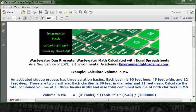There are two clarifiers. Each clarifier is 36 feet in diameter and 11 feet deep. Calculate the total combined volume of all three basins in MG and also total combined volume of both clarifiers in MG. So today's problem is a volume calculation problem.